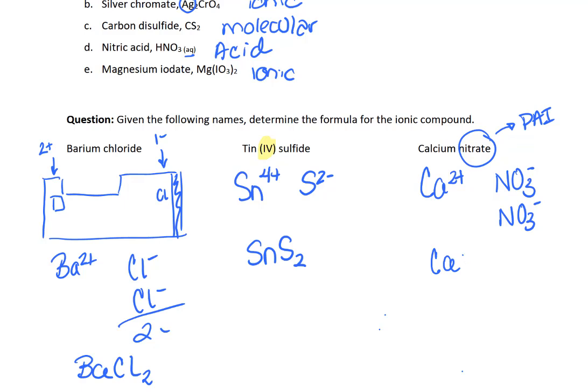When we write calcium nitrate, a lot of times folks will write a two right here. And there's one problem with this. The way that we've written that two actually means that we have 3 times 2 oxygen, nitrogen, not two nitrates. So we need that nitrate to be in parentheses.